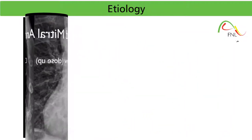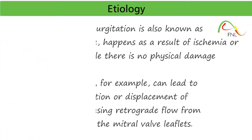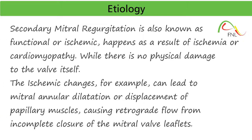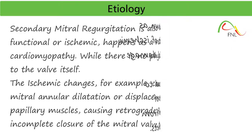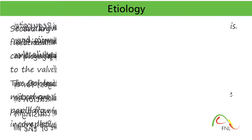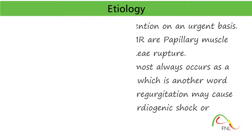Secondary mitral regurgitation, also known as functional or ischemic, happens as a result of ischemia or cardiomyopathy. While there is no physical damage to the valve itself, ischemic changes can lead to mitral annular dilation or displacement of papillary muscles, causing retrograde flow from incomplete closure of the mitral valve leaflets. Acute mitral regurgitation requires surgical intervention on an urgent basis.